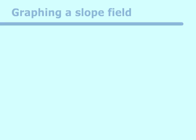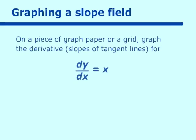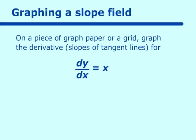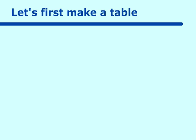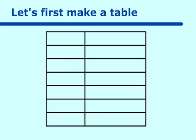What we're going to do is dy/dx is equal to x. That's the slope of some function, and you probably already know what the function is. We're going to get a piece of paper with grid lines on it, or graph paper. We need to make a table first. On our table, we only need the values of x, because dy/dx is equal to x.